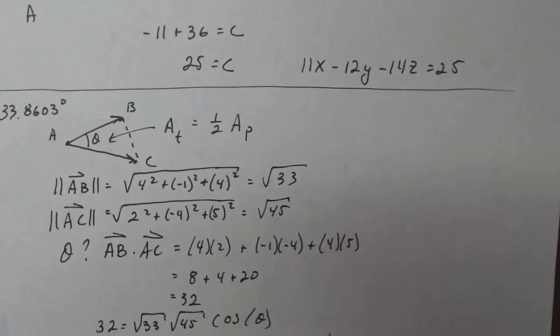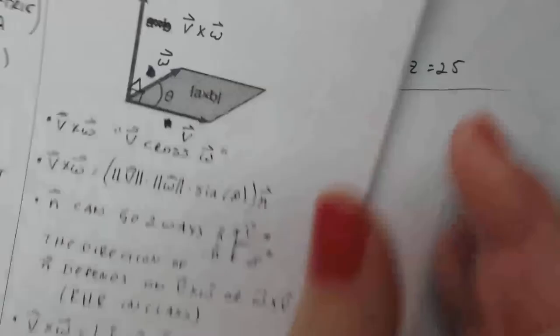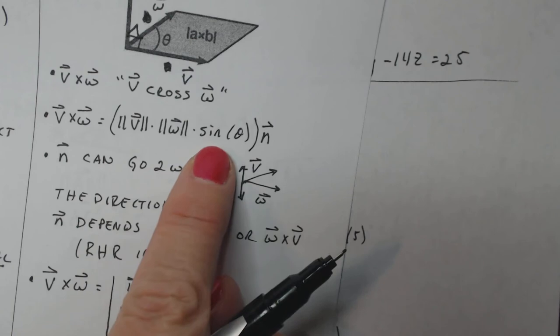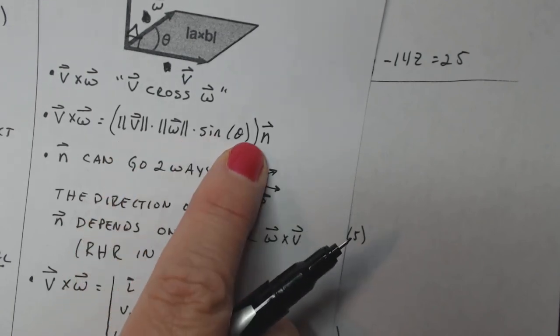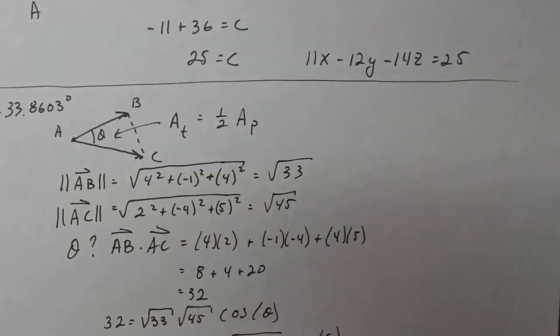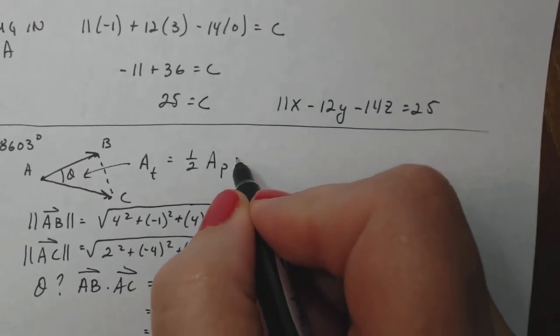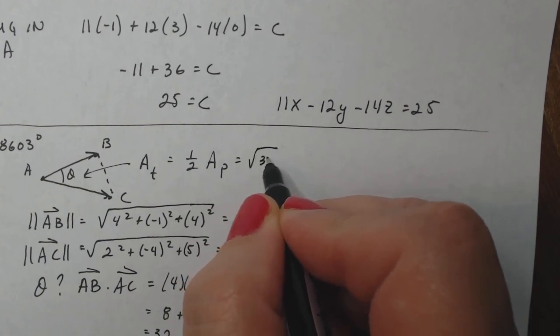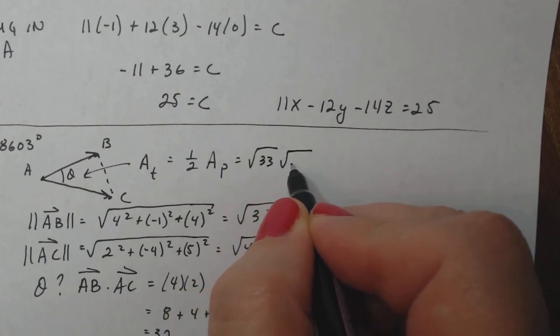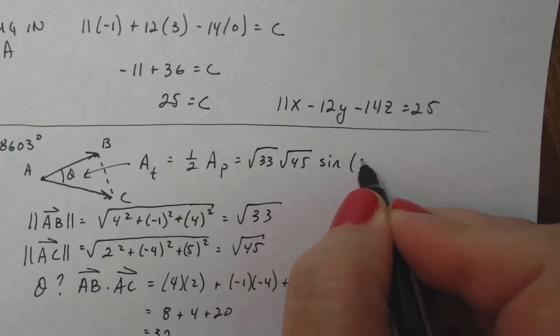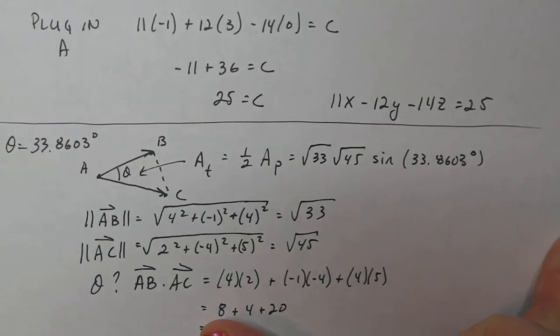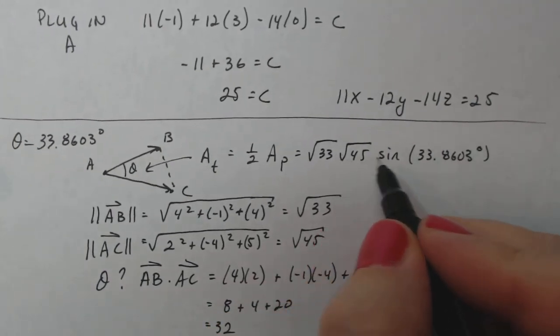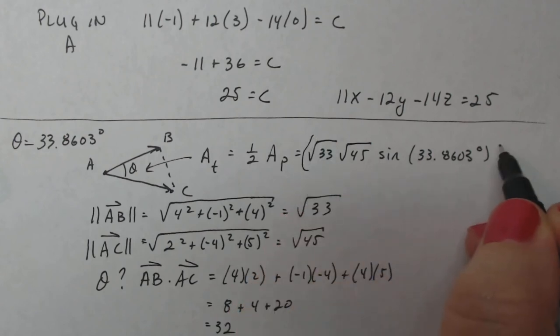Now we can finally come down to nuts and bolts here. I know that that's the area of the parallelogram. So I got to multiply those two magnitudes and the sine of 33 degrees. And then half of that is the area of the triangle. So that's going to equal the magnitude of AB times the magnitude of AC times the sine of my angle, 33.8603 degrees. Make sure you're in degree mode when you do this. And then I got to multiply this whole thing by one half to get the triangle.